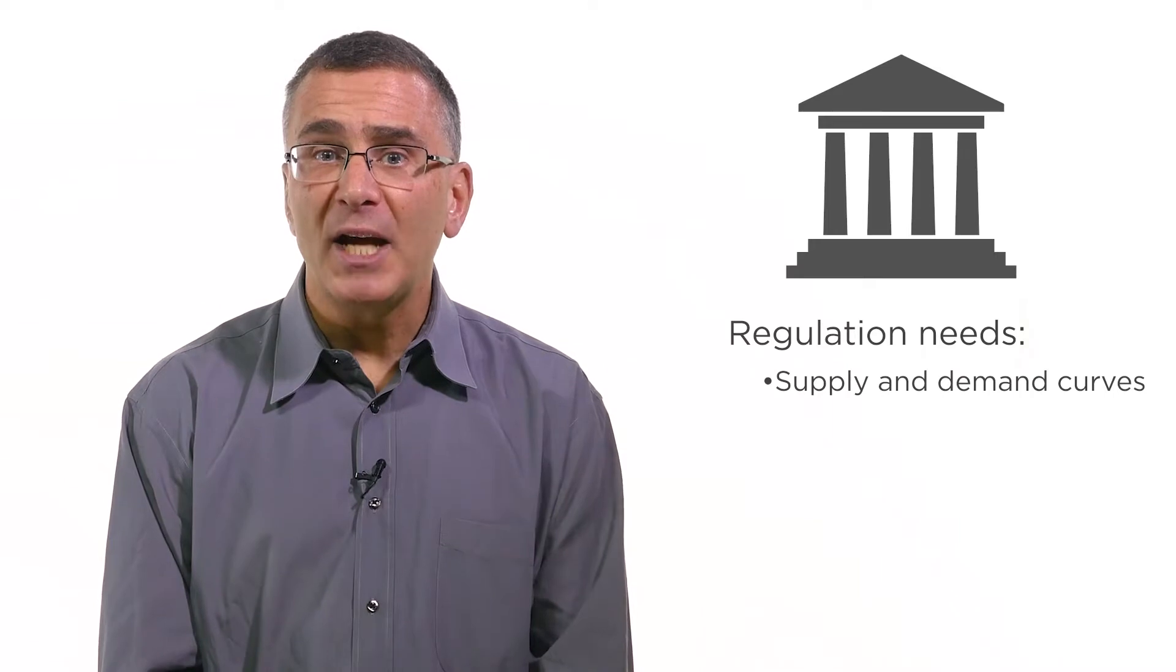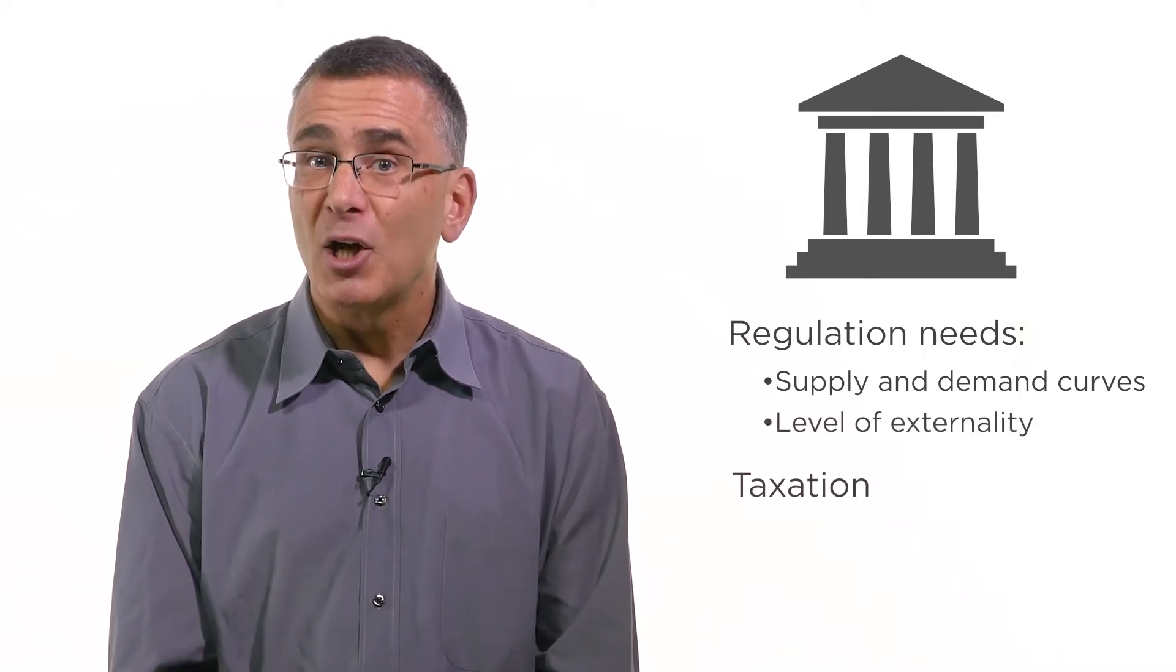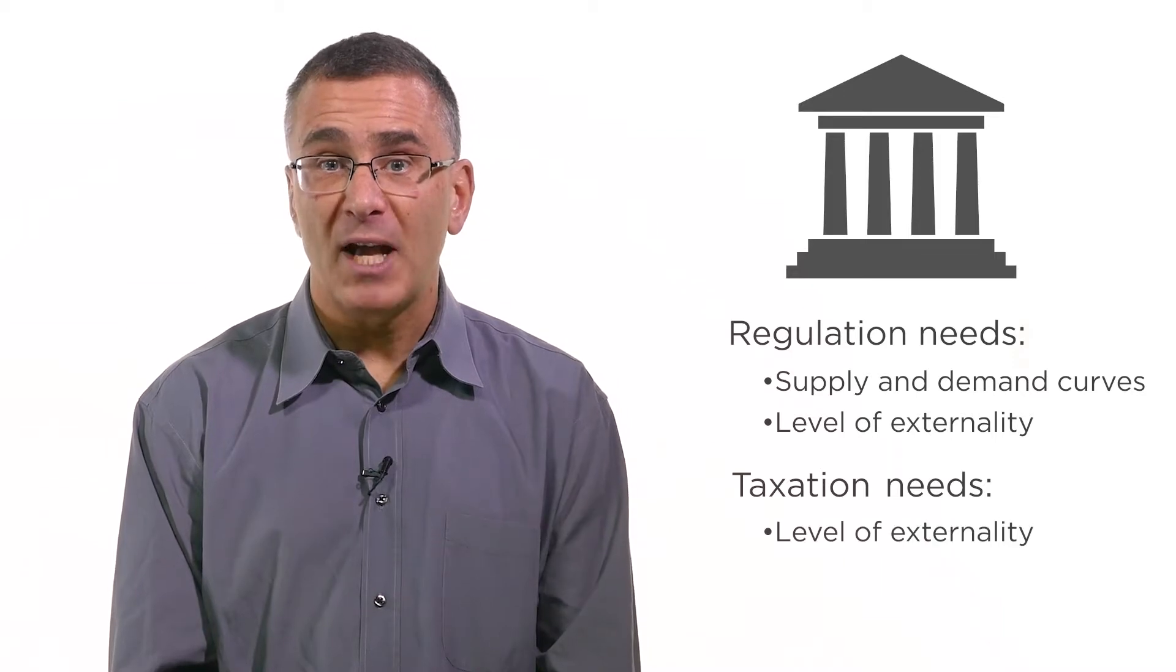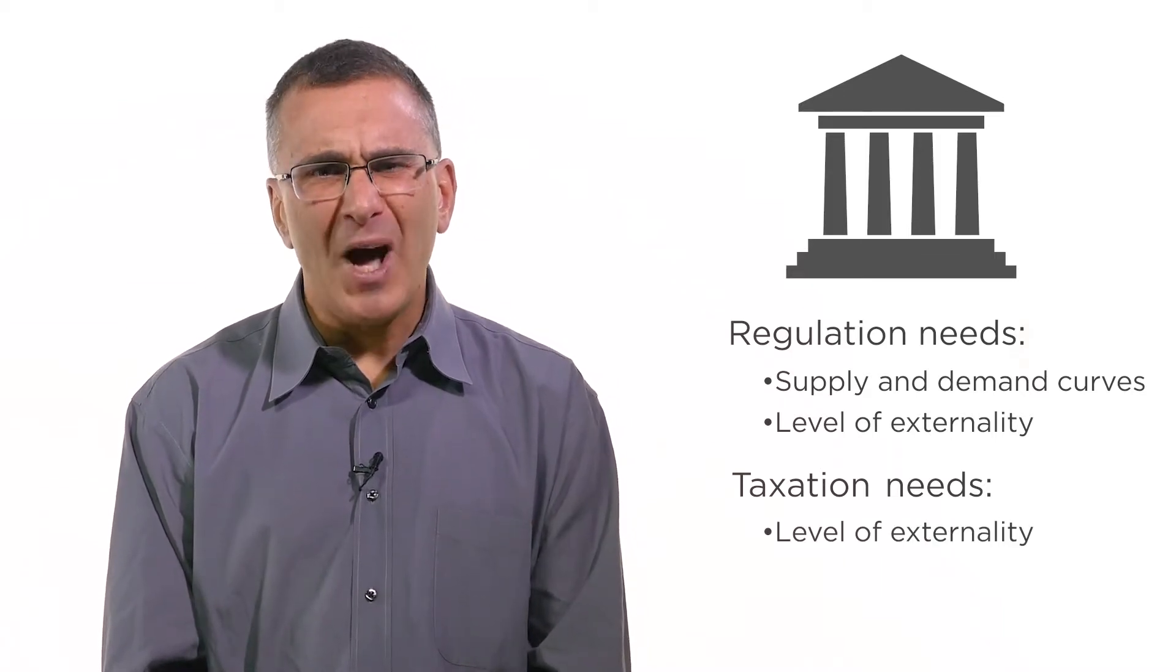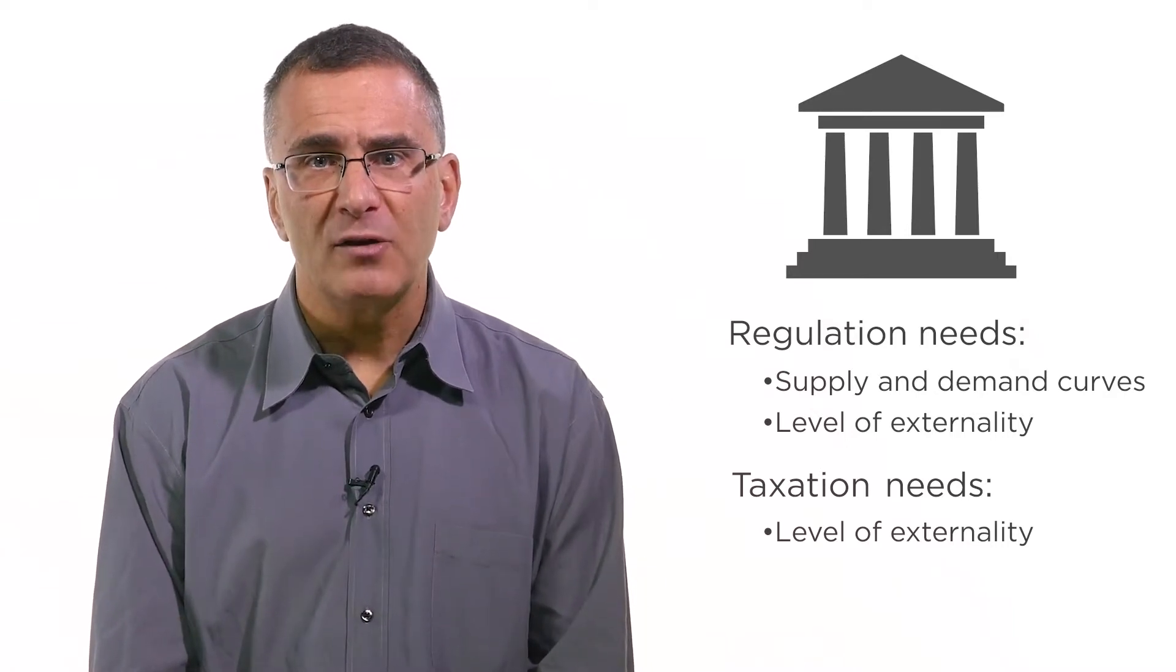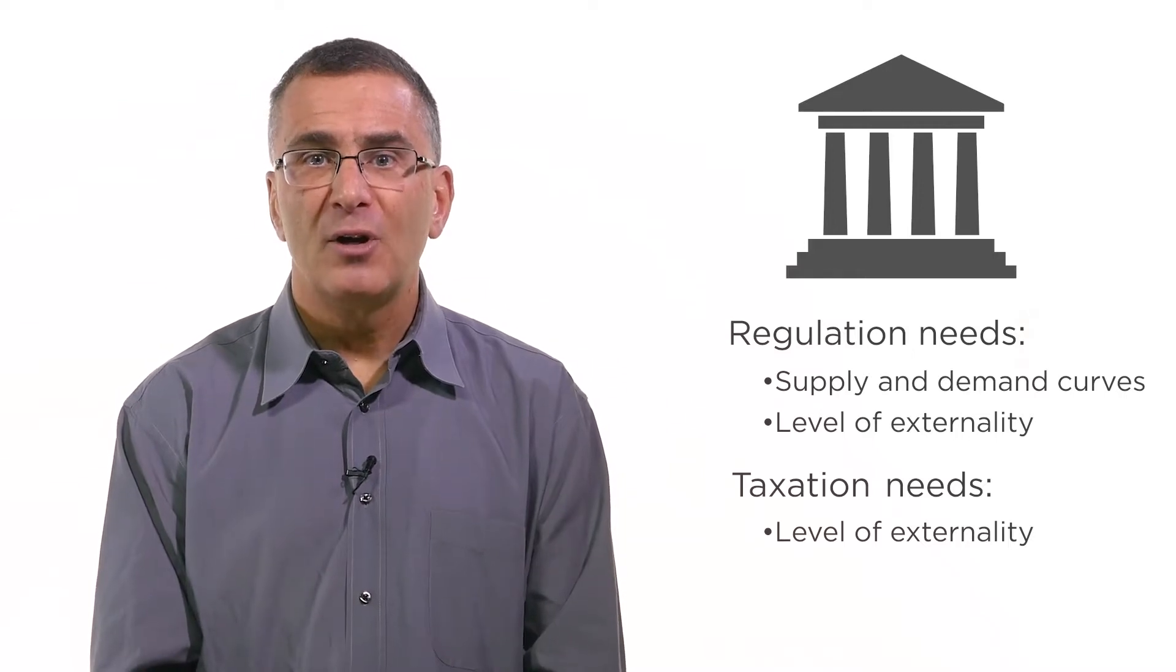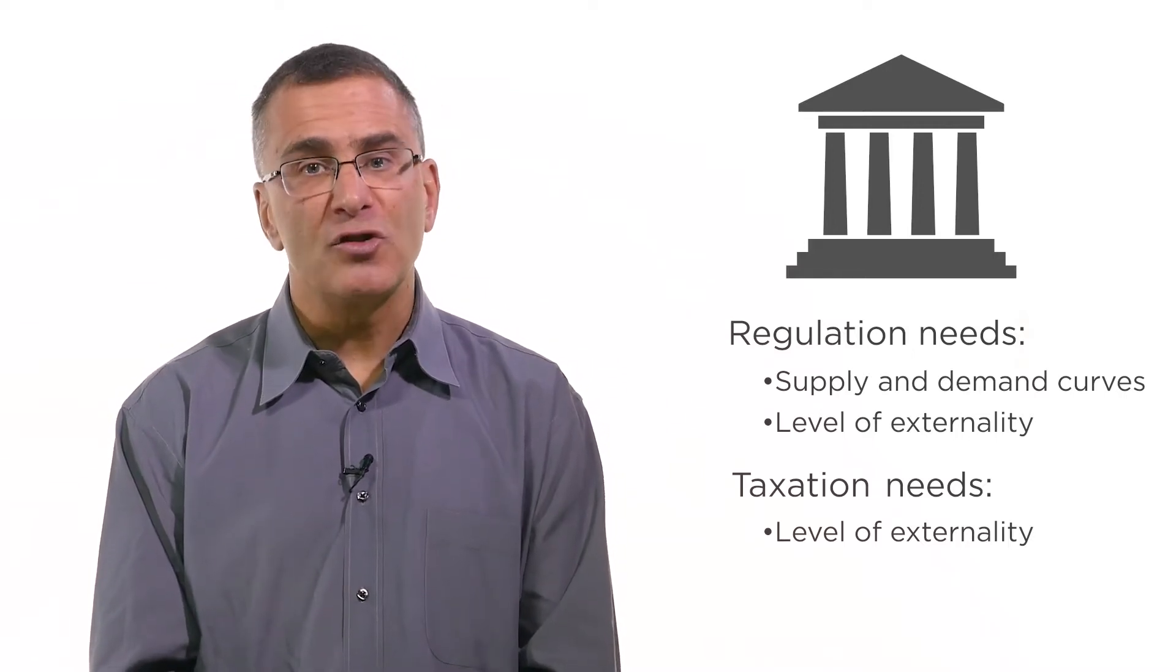So to get regulation right, governments need to know the supply and demand curves and the level of the externality. To get taxation right, governments just need to know the level of the externality. So why do most government interventions to protect the environment involve regulation that restricts quantities, like bans on dangerous substances or limits on pollution allowed, rather than taxation that changes costs?